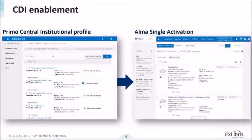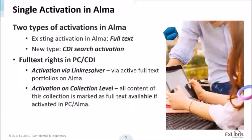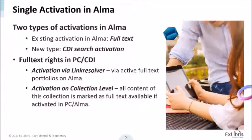The first topic is what happens during CDI enablement, what is included in the report generated as part of this enablement, and what you need to do afterward. A brief recap: you now have two types of activations in Alma. The existing type is meant for full text — the one you were used to doing via activation wizards for community zone collections. The new type is the CDI search activation, or activation for search.